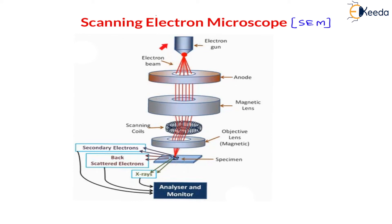Here you can see the actual diagram and setup of this scanning electron microscope. You will see the electron gun — a gun through which the electron beam comes out. There is also an anode. On this anode we provide a positive charge, and since the electron has a negative charge, the electron beam is attracted towards this anode. The anode has a hole, so the attracted beam passes through this hole and travels to the magnetic lens. The principle of magnetostatic focusing is used here, which I have explained in the previous lecture. This magnetic lens is also called the condenser lens.